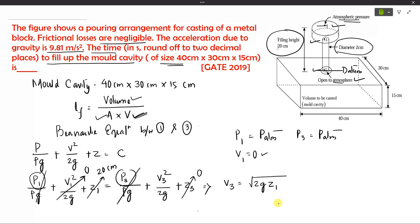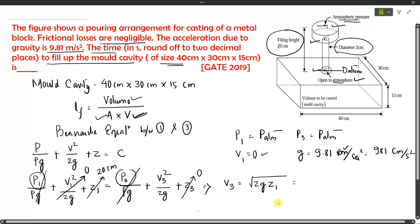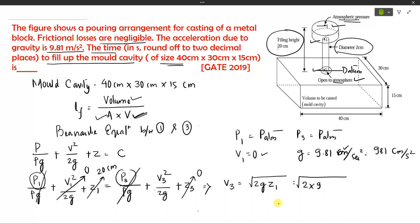Converting g to centimeters: g = 9.81 m/s² = 981 cm/s². Substituting the values: v3 = √(2 × 981 × 20), which gives v3 = 198.09 centimeters per second.